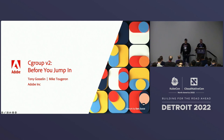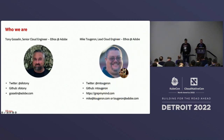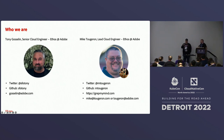This afternoon we're going to be talking about CGroup V2 and taking a little journey of how Adobe kind of came across this new development in Kubernetes. Before we get started, my name is Tony Goslin. I'm a senior cloud engineer with the Ethos team at Adobe, and this is my co-presenter. I'm Mike Tujeron, a lead cloud engineer also at Adobe on the Ethos team, and you can see all of our contact information below.